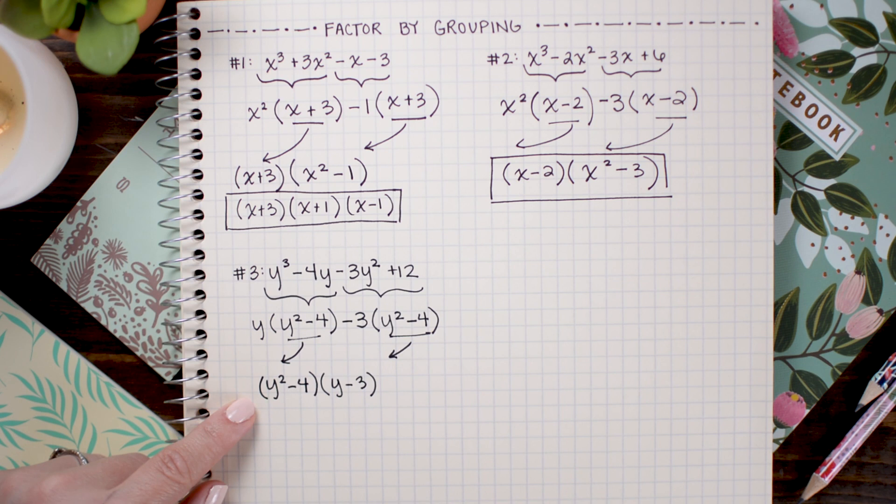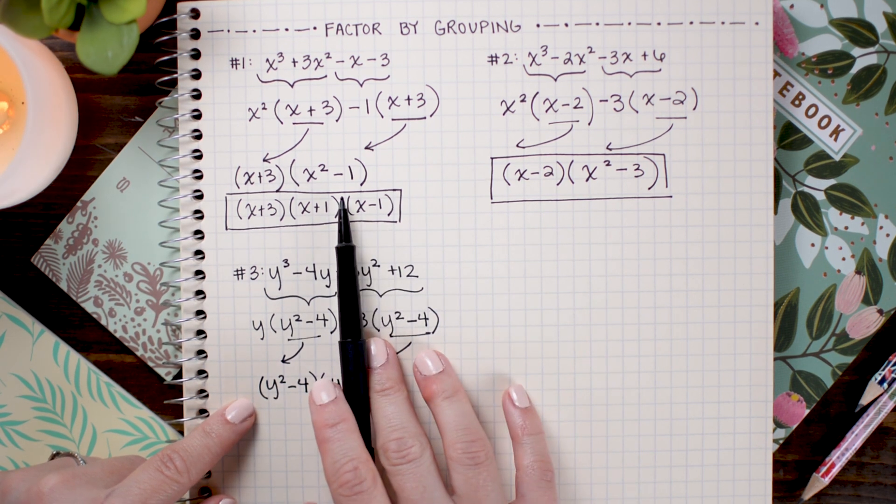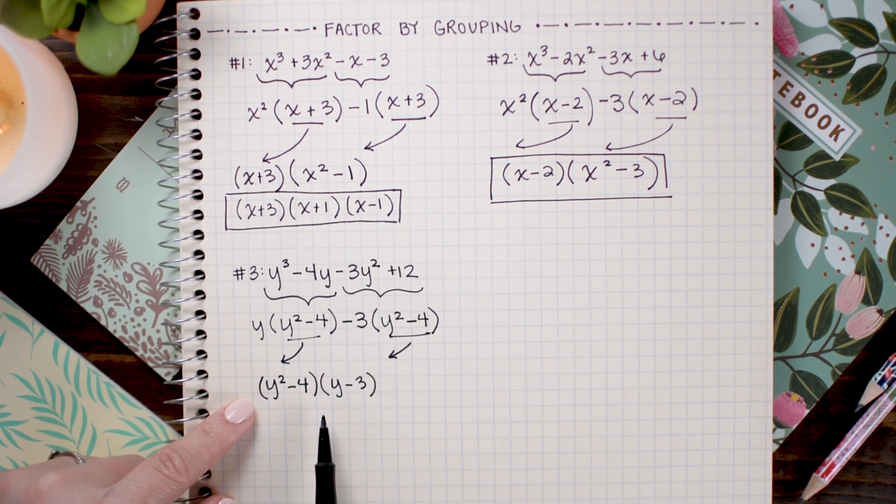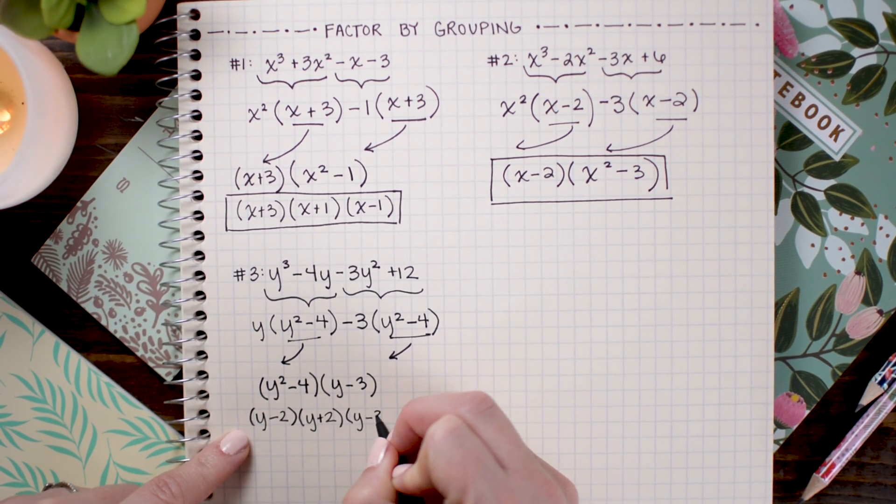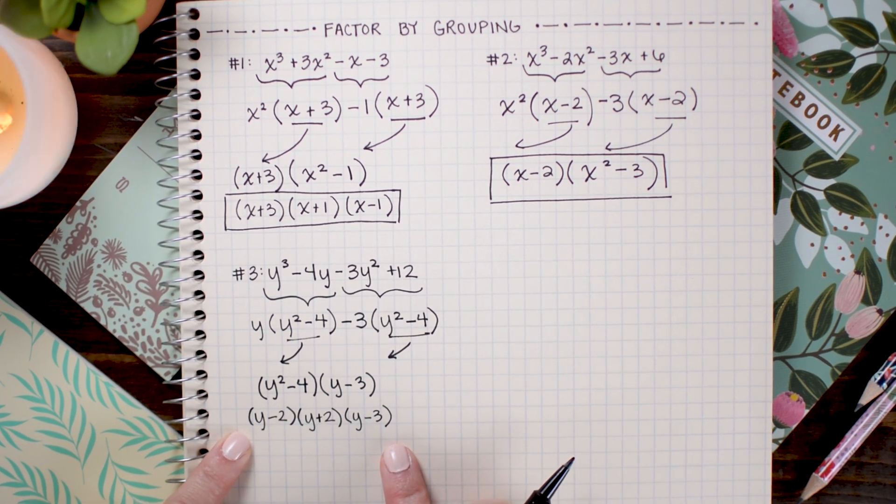And, once again, our last step is to do any last minute factoring that we might see. And, once again, like in our first problem, we have a difference of perfect squares here. So, I can go ahead and factor y squared minus 4 into y minus 2 times y plus 2. There you go. That is our final answer.